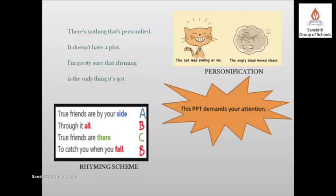'It doesn't have a plot. I am pretty sure that rhyming is the only thing it's got.' A plot is a literary term used to describe the events in a story. A story has an introduction — how it begins and how characters are introduced — then action, when excitement or tension is built up, and finally a climax, which is a turning point in the story.